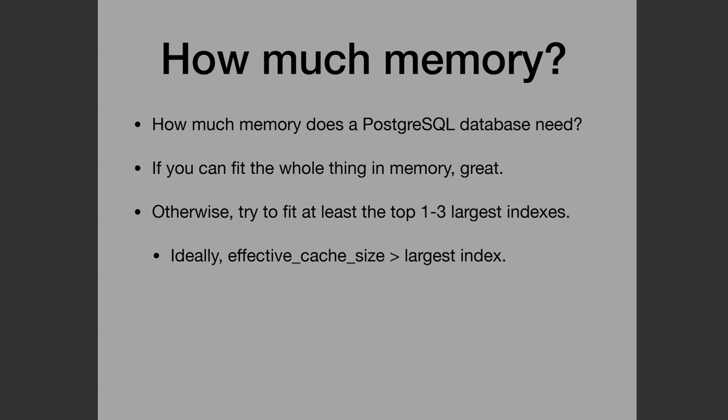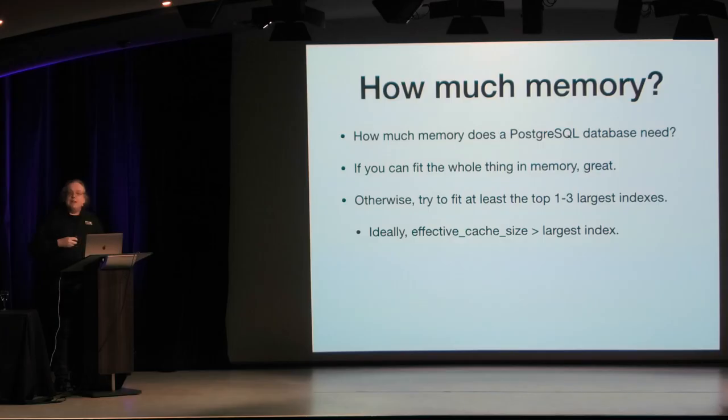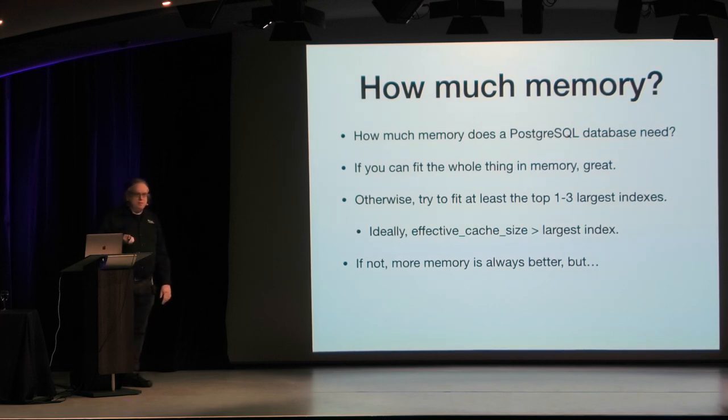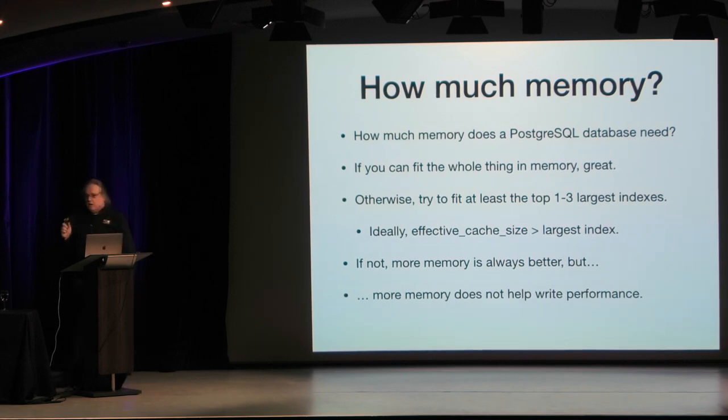As a quick rule of thumb, you want to be able to set effective_cache_size larger than the largest index. So if your largest index is, say, 12 gigabytes, you want to make sure you have at least 14 to 15 gigabytes of memory, because the planner will reward this. Now, more memory is always better - no one looks at a system and says the real problem with this machine is it has too much RAM. But remember that more memory doesn't help write performance on Postgres. In fact, very large shared_buffer values can hurt write performance by causing checkpoints to be larger.